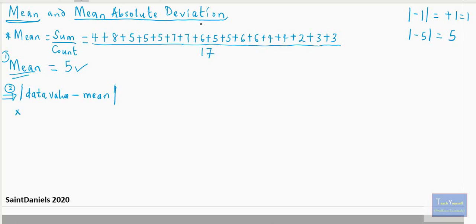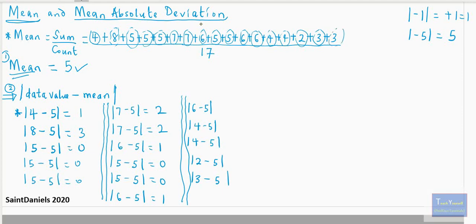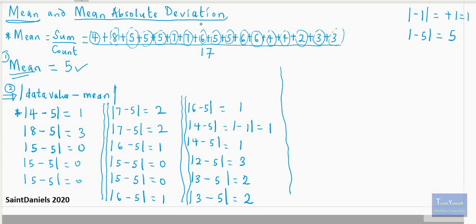So for each data value, you find the absolute difference from the mean. The first data value is 4: absolute difference of 4 minus the mean 5 gives 1. The next one, 8: 8 minus 5 gives 3. Then 5 minus 5 gives 0. And the last one, 3: 3 minus 5 gives minus 2, and the absolute value of minus 2 is 2. Be very careful so as not to make any mistake here, as it will affect all your values. For example, 6 minus 5 is 1; 4 minus 5 is minus 1, but the absolute value of minus 1 is 1; and 3 minus 5 is minus 2, absolute value 2. This is step two of finding the Mean Absolute Deviation.